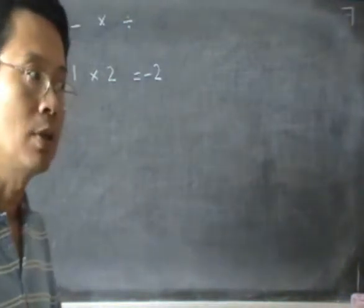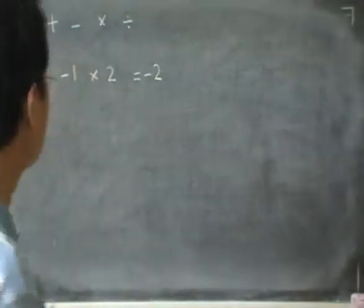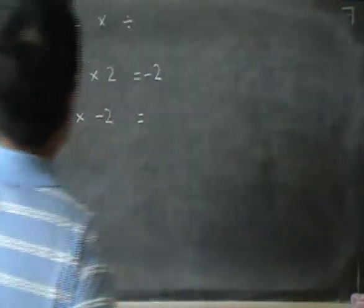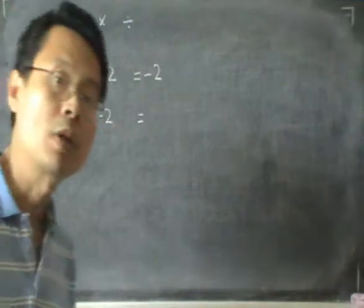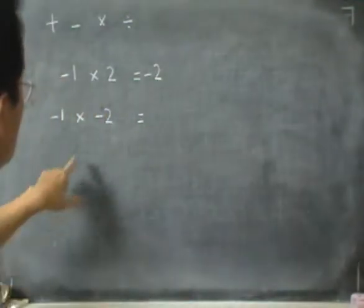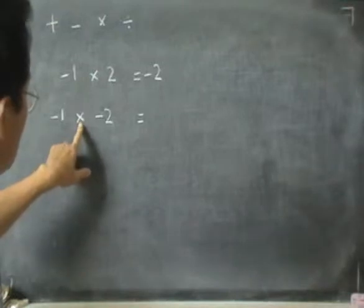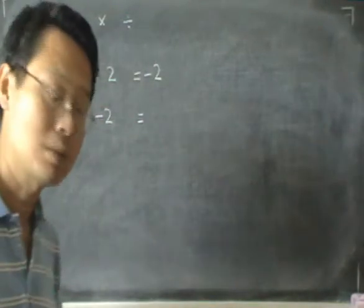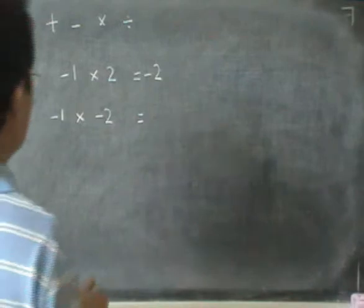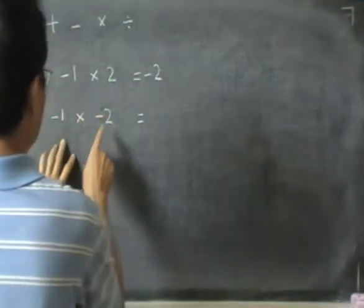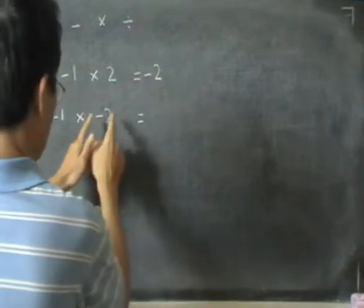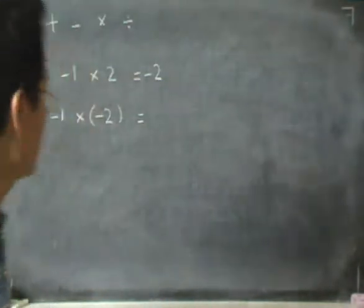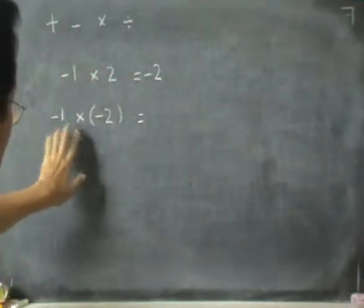Now what if I have minus 1 times minus 2? First of all, it is not good to write an operation symbol right next to another one without any number in between, because that can be a little confusing. So what we should do is if that's supposed to be negative 2, it's better practice to put a bracket around it. So I have minus 1 times minus 2.